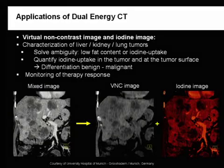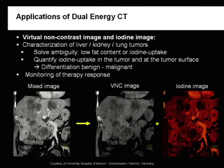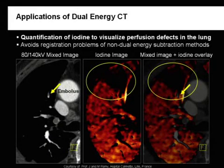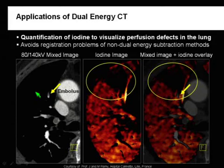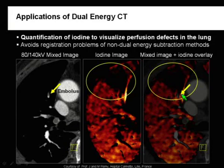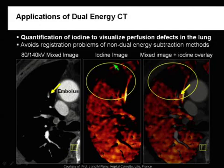Moreover, you can quantify iodine uptake in the tumor and at the tumor surface, which allows differentiation of benign and malignant tumors and is important for monitoring therapy response. Changing the three materials enables pulmonary embolism evaluation — in this example, an embolism looks similar to a contrast-filled vessel, but using dual energy information you can clearly see this is not iodine but soft tissue with higher density, confirming it as an embolism. You can directly visualize the hypoperfusion of the lung tissue caused by the embolism.